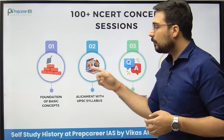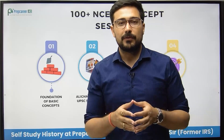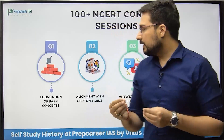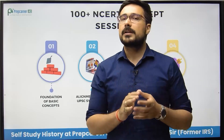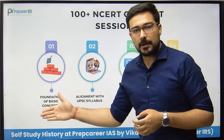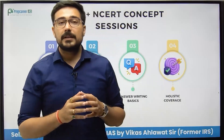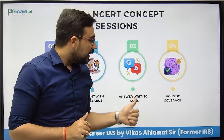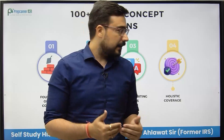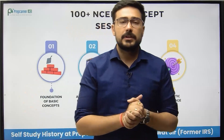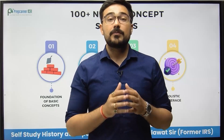In these sessions, we will focus on four areas: number one, foundation of basic concepts — starting from what is history, what is historical period, what is proto-history, what is pre-history. Second, alignment with the UPSC syllabus — the history optional syllabus is divided into 51 parts, and we are going to align each concept with the syllabus. Number three, answer writing — since mains is subjective, all of you need to start answer writing from the very beginning. Number four, the overall package is holistic, completing the basic-level foundation of history optional.